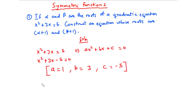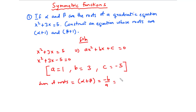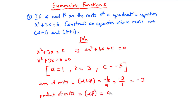Let's find the sum of roots and product of roots of this existing quadratic equation. The sum of roots alpha plus beta equals negative b over a. We have b equal to 3, so negative 3, and a equal to 1, giving alpha plus beta equal to negative 3. For the product of roots, alpha times beta equals c over a. We have c equal to negative 5 and a equal to 1, so alpha beta equals negative 5.